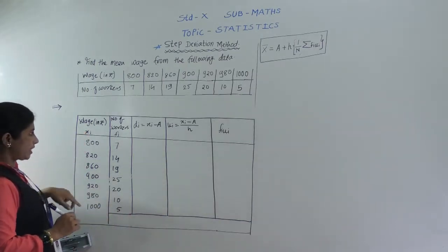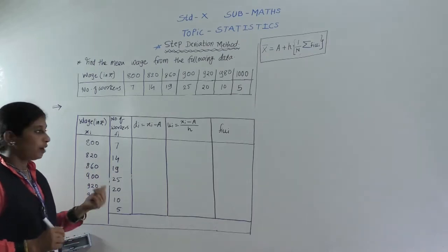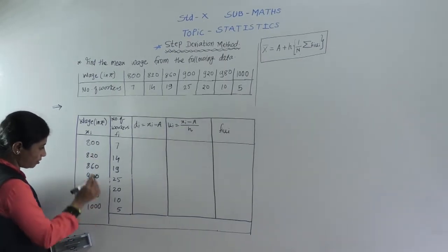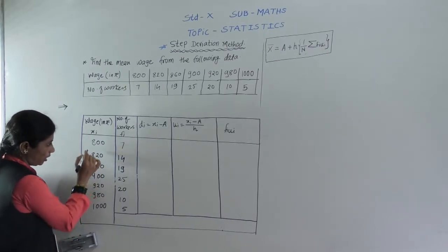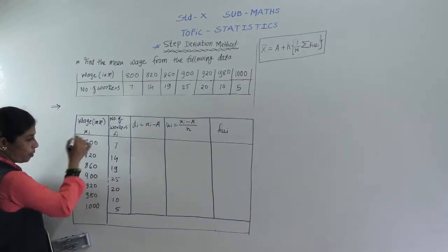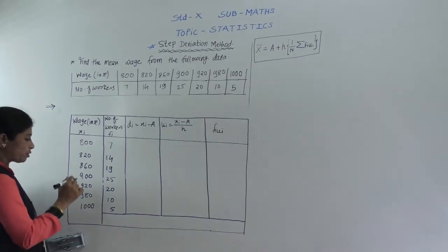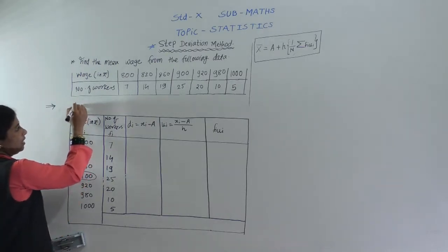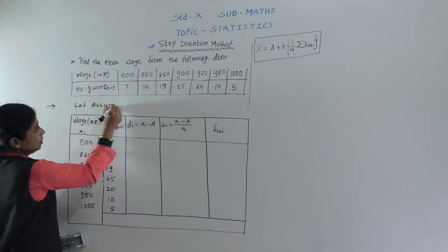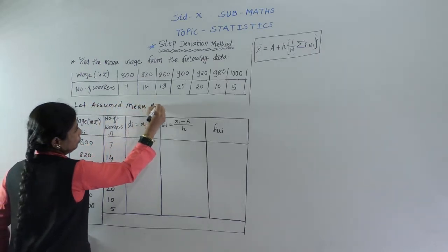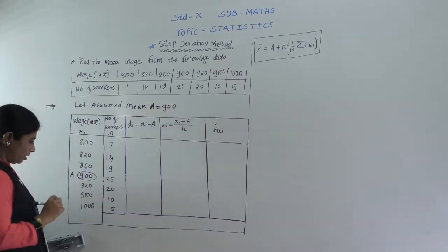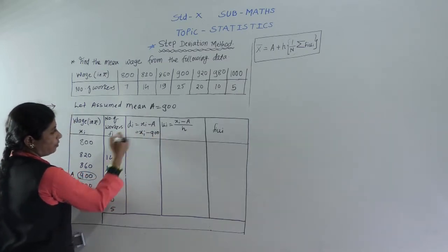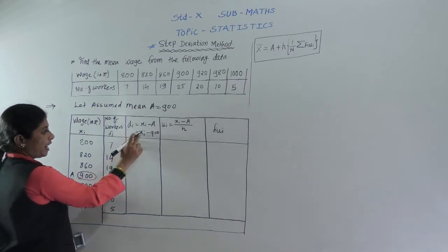Now we have to find di. How do we find di? di = xi minus A. A is the assumed mean. From the xi values we choose the middle value. We have seven observations — an odd number — so we get an absolute middle value. That middle value is 900, so we let A = 900.